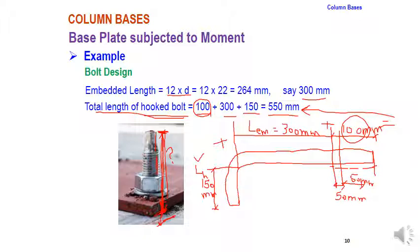The key design parameters to report are the bolt diameter and the total length of the hook bolt. The final design gives a 22 mm diameter, 550 mm long hooked anchor bolt. Thank you so much.